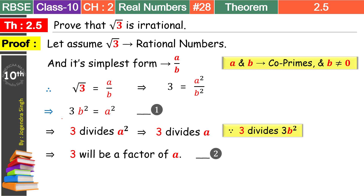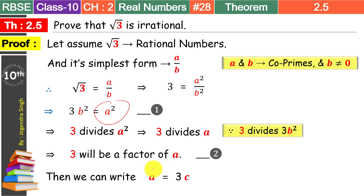3, a का factor है, that means 3 into कोई number a के बराबर होगा। वो number हमने c suppose किया, then we can write this as a is equal to 3c. Equation 1 में a square है और इस नई situation में a है — दोनों में a है। तो हम इस new equation को square करते हैं both sides, and after squaring we get a square is equal to 9c square — this is equation number 3.